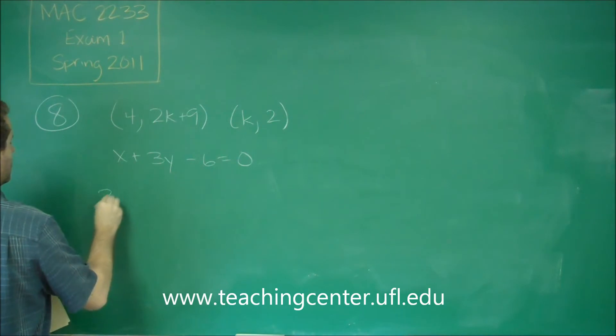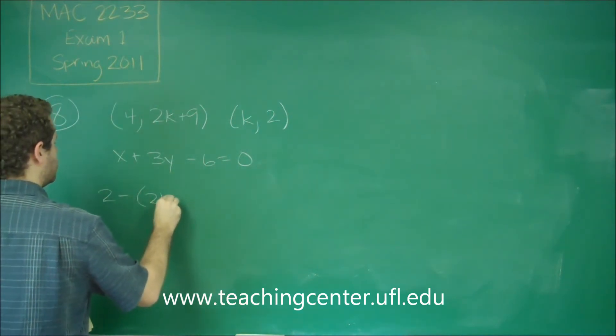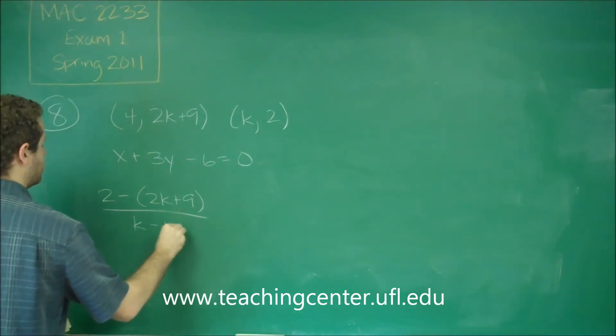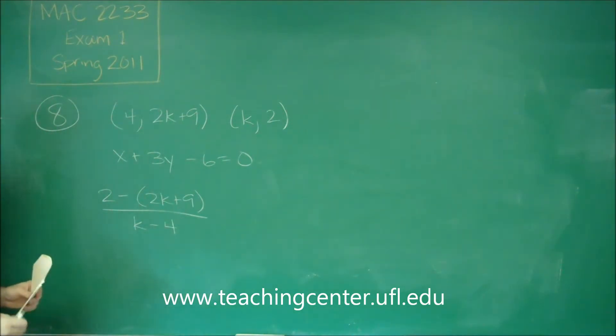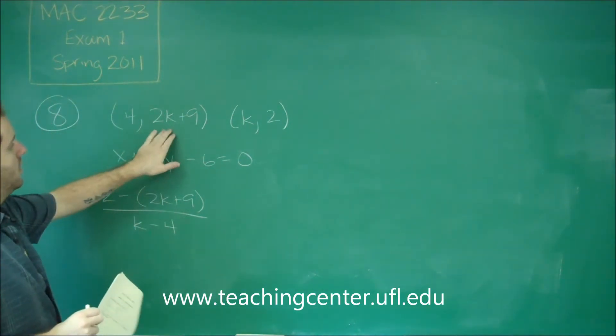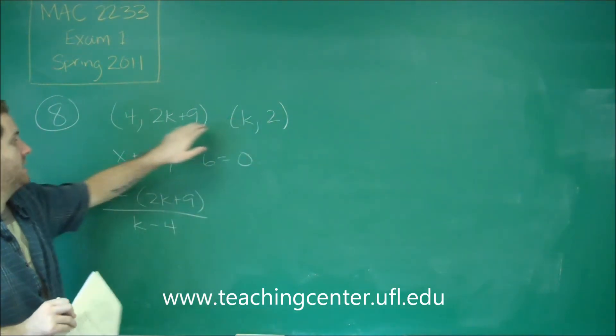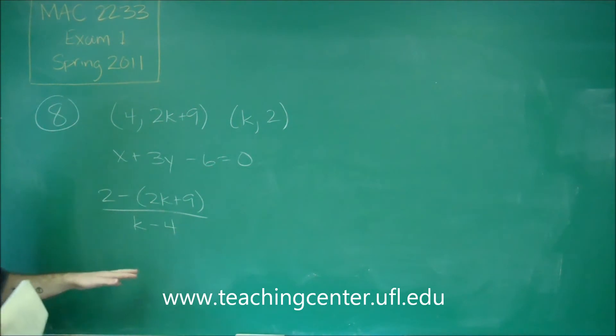We're going to get 2 - (2K+9) over K - 4. So whatever that happens to be, that is the slope of that first line. We do the second Y minus the first Y, second X minus the first X. Delta Y over delta X.